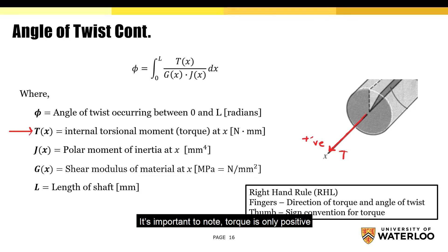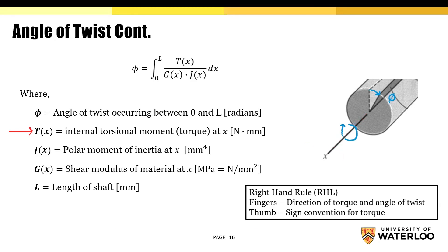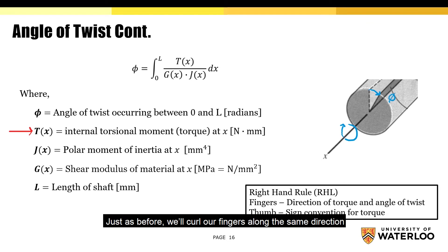It's important to note, torque is only positive if your thumb is pointing away from the cross-section of the shaft. Now, let's consider a different scenario where we apply the same torque in the clockwise direction. Just as before, we'll curl our fingers along the same direction. You'll notice how the angle of twist is now occurring in the clockwise direction.